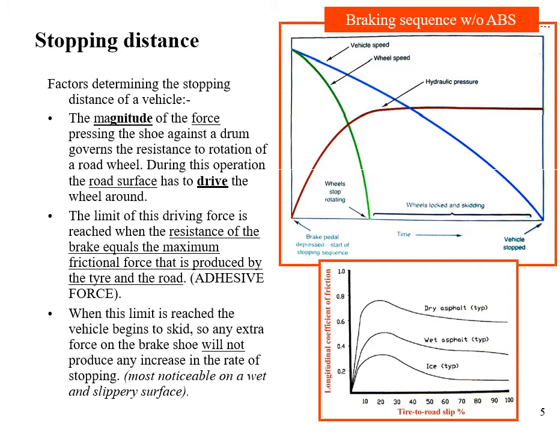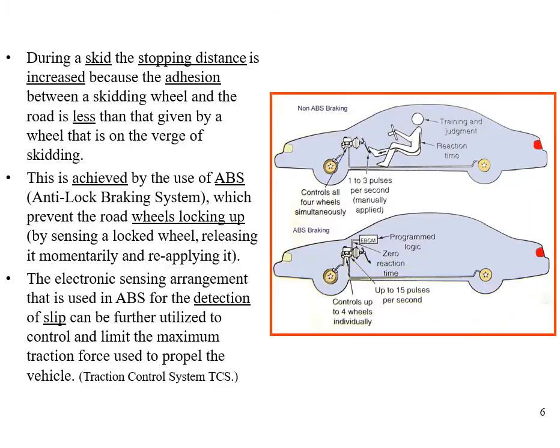Any extra force on the brake shoes will not produce any increase in the rate of stopping. During a skid, the stopping distance is increased because the adhesion between the skidding wheel and the road is less than that given when the wheel is on the verge of skidding. This is addressed by the use of ABS — we try to get stability — the anti-lock braking system prevents wheel lock-up by momentarily applying and reapplying the brakes.